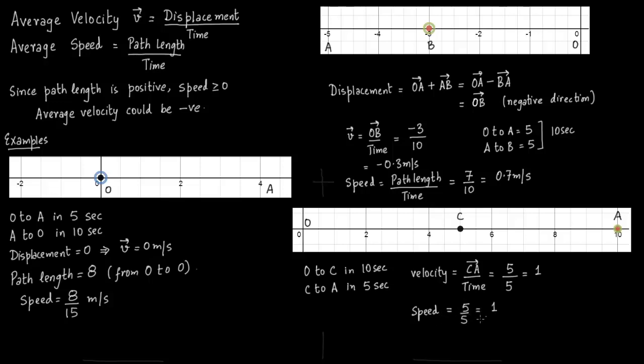That is important. Speed is path length is 5. Time again is 5. So speed is 1 meters per second. And you can see in this case velocity and speed are the same.